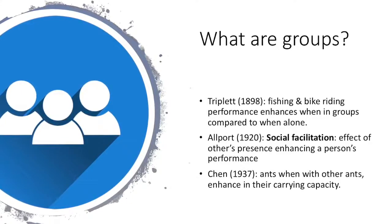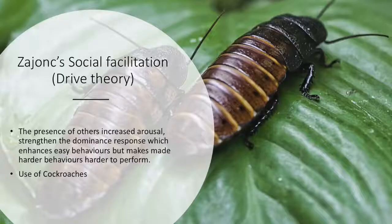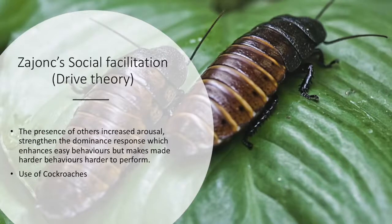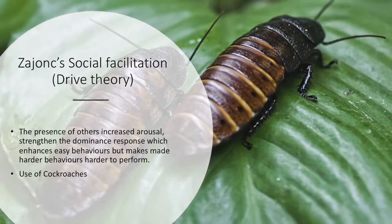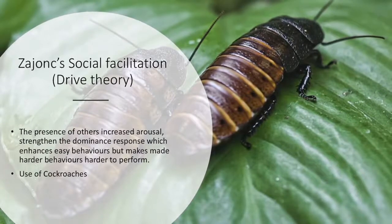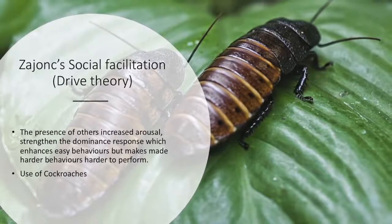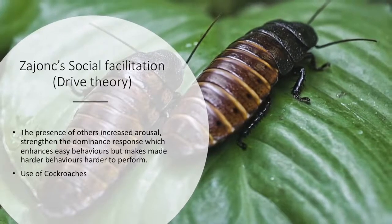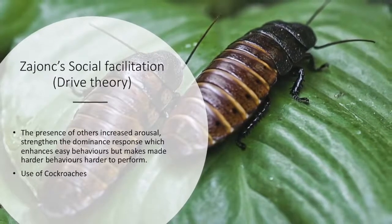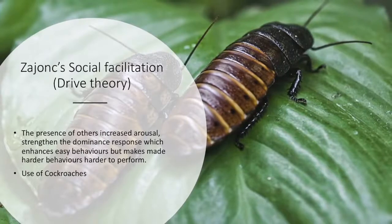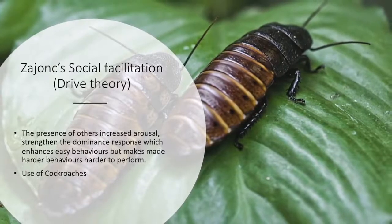Even ants enhanced their carrying capacity when surrounded by other ants, according to Chen in 1937. Zajonc's social facilitation, also known as drive theory, stated that the presence of others increased arousal. As a result, this strengthens the dominance response, which enhances easy behaviours and makes harder behaviours harder to perform.